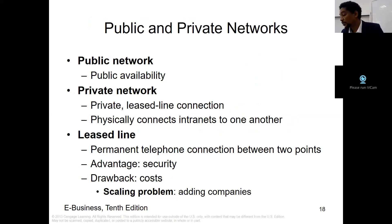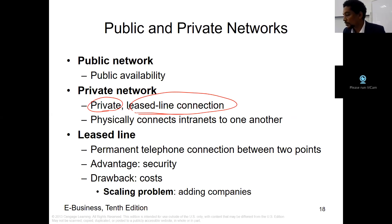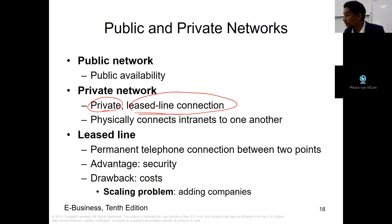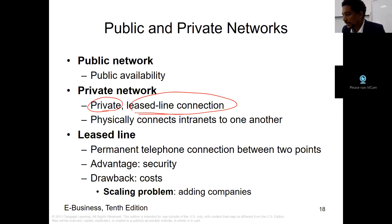Public networks are networks that are available publicly. Private networks are networks that are private and use a leased line connection. For example, in some places you access public Wi-Fi, which means Wi-Fi available to everybody within a perimeter. There is also private access where you can use your own digital subscriber line for your own leased line connection. This physically connects intranets to one another.